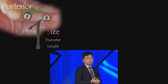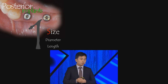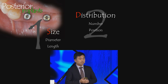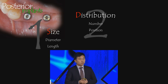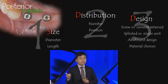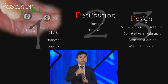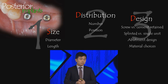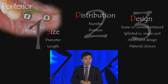In summary, today we talked about posterior implants across three areas: size — diameter and length, which is a critical discussion; distribution — number and position, which must be discussed prior to surgery; and design — screw-retained, cement-retained, splinted or single unit, and abutment design, which is critical for long-term longevity. With the many materials available today, material selection is also something we need to discuss with our patients. Thank you for your kind attention.